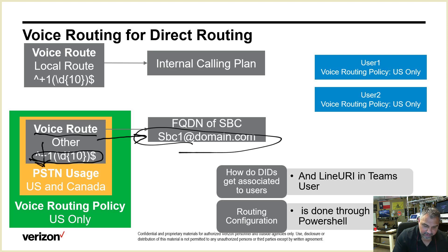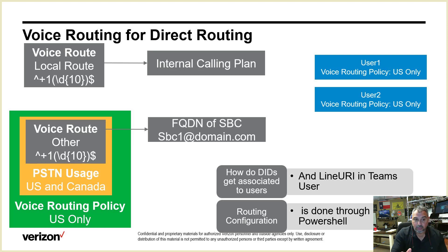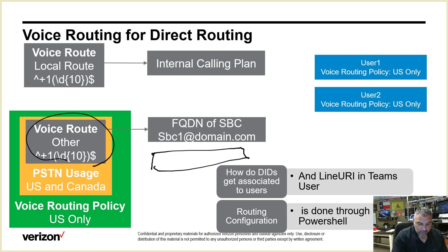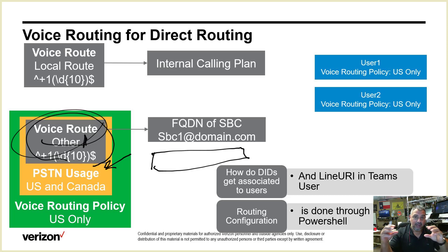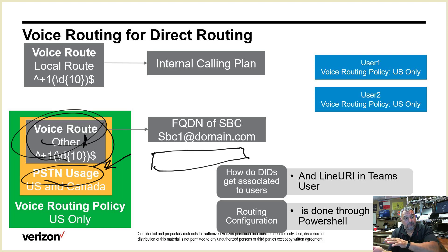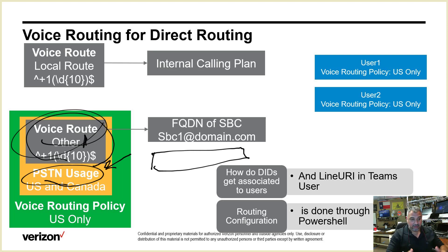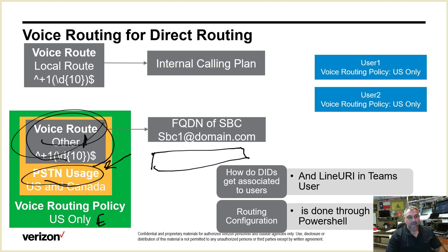What if you had two SBCs? You'd create another voice route and nest both voice routes into one PSTN usage — giving you redundancy. Maybe you have redundant SBCs, or SBCs in different parts of the country. Then you'd create a voice routing policy, say 'East,' and give it to all your East users, and a policy 'West' for West users. You can see how that works.